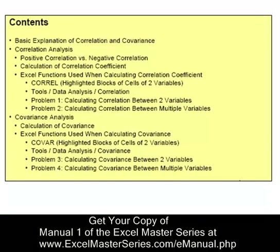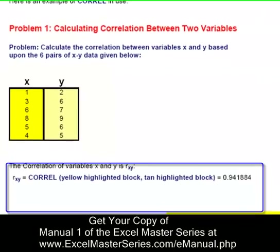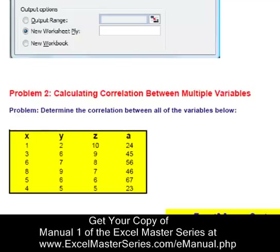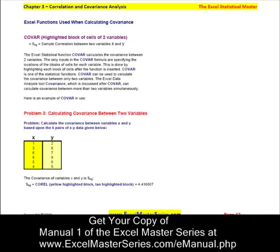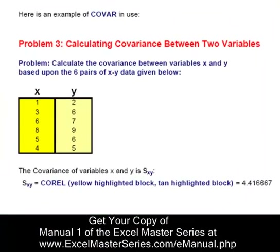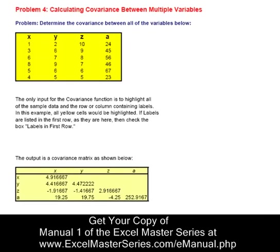The next chapter is correlations and covariances. We show how to create correlations between two variables and between multiple variables, and the Excel steps you'll need to know to do that. For covariances, the same thing — between two variables and multiple variables. There's the covariance matrix output of Excel. We'll show you how to read that and how to create it.